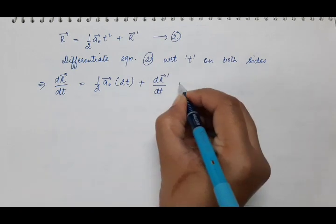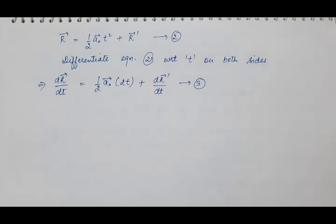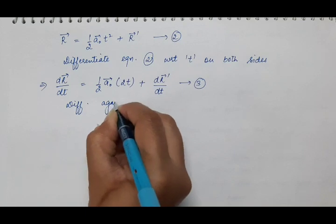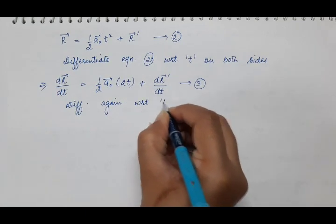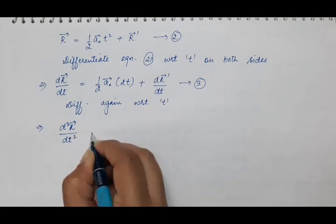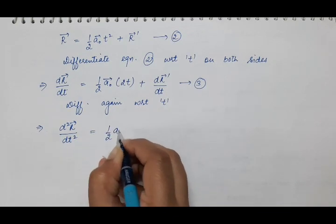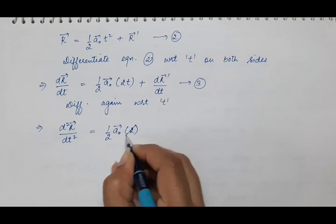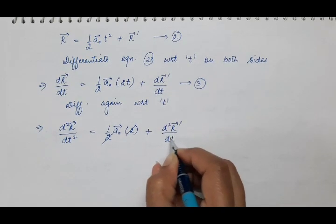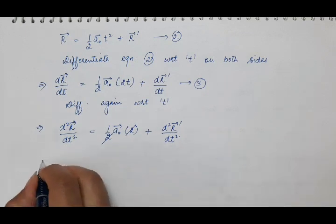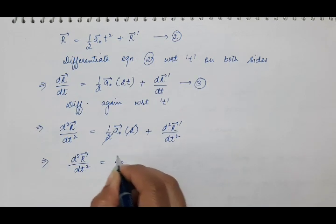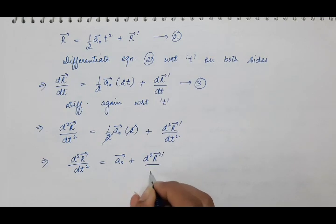Suppose this is equation 3. Now differentiate this equation once again with respect to time on both sides. You will get d²R/dt² = ½A0 × 2 — the 2's cancel — so we have d²R/dt² = A0 + d²R'/dt².